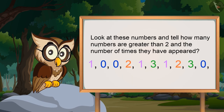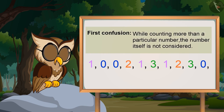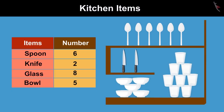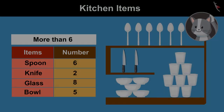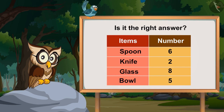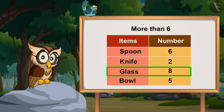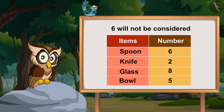For example, look at these numbers and tell how many numbers are greater than 2 and the number of times they have appeared. We usually get confused — should we count 2 or not? Let's look at this example. Some kitchen items and their numbers are shown here in tabular form. Which items are more than 6 in numbers? Spoon and Glass? I think just the glass, because you asked more than 6, therefore we cannot consider 6. Absolutely right! While counting more than a particular number, the number itself is not considered.